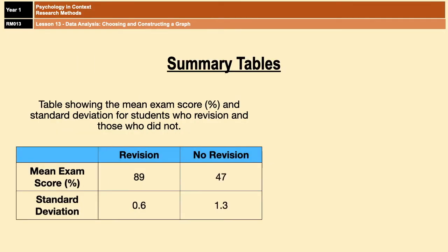To start us off, one of the simplest ways of representing data is in the form of a summary table. To be honest with you, nine times out of ten, these summary tables are used in exams to ask students to interpret a set of results. For example, the table on the screen suggests that more revision leads to better scores because the mean exam score is higher in the condition that revised.